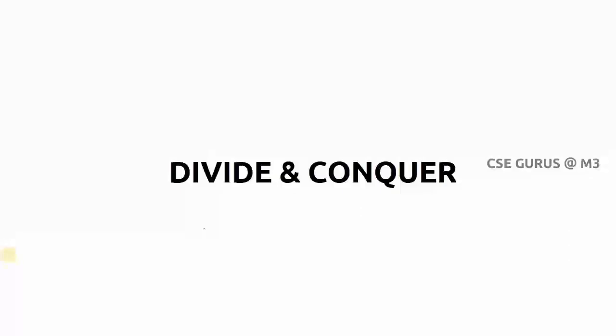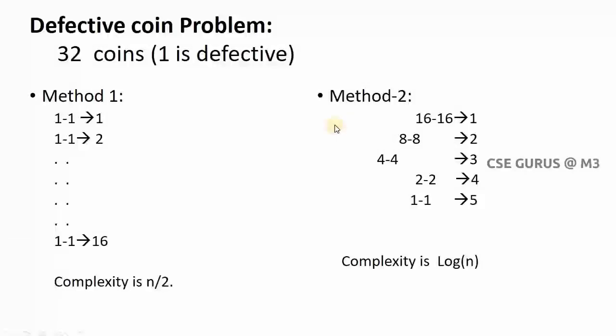Now we are turning into the new topic: the divide and conquer method. I'll take one good example so you can understand better. The problem is the defective coin problem. Suppose you are given 32 coins and one balance. You need to find one coin which is defective among those 32 coins.